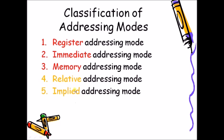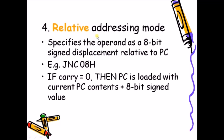In relative addressing mode, a direct address (displacement) is added with the program counter (PC) to give the next instruction address. The operand is specified as an 8-bit signed displacement relative to the PC. For example, 'JNC 08' — jump if no carry — if the carry flag is 0, then 8 is added to the contents of the PC and the result is stored back in the PC to give the next instruction address.